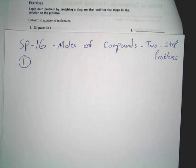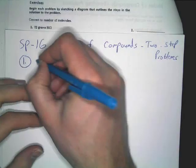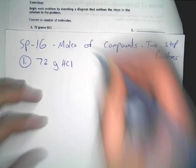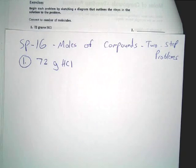Alright, so let's identify what we've got. We've got 72 grams of hydrochloric acid or HCl, and this wants us to convert to number of molecules, or just particles for the most part.